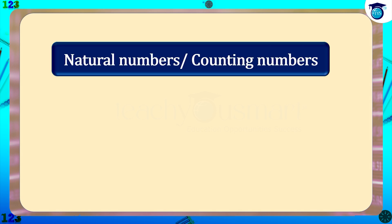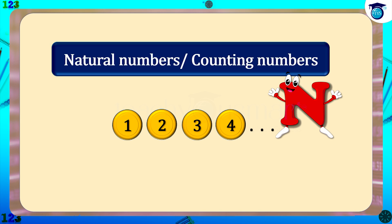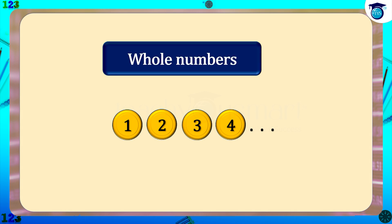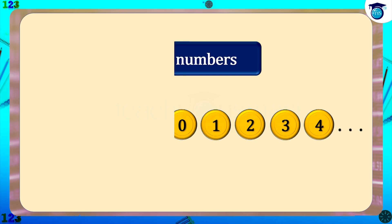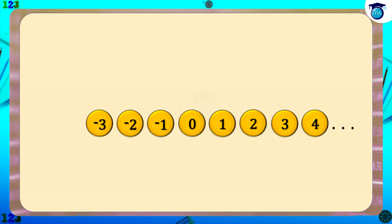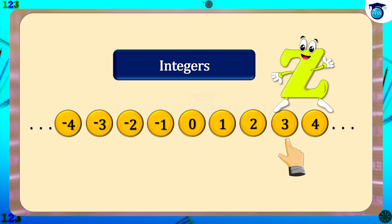Natural numbers are counting numbers — that is, 1, 2, 3, 4, etc. — and are denoted by N. Whole numbers are natural numbers including zero, that is 0, 1, 2, 3, 4, etc., denoted by W. When we include negative numbers along with whole numbers we get integers, denoted by Z, which are 0, 1, 2, 3, 4, etc., and -1, -2, -3, -4, etc.